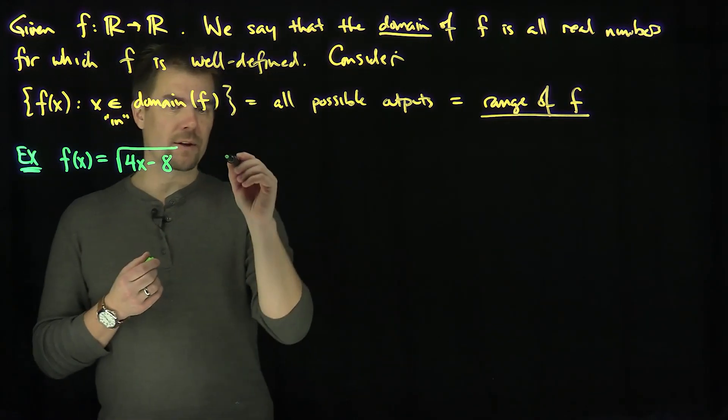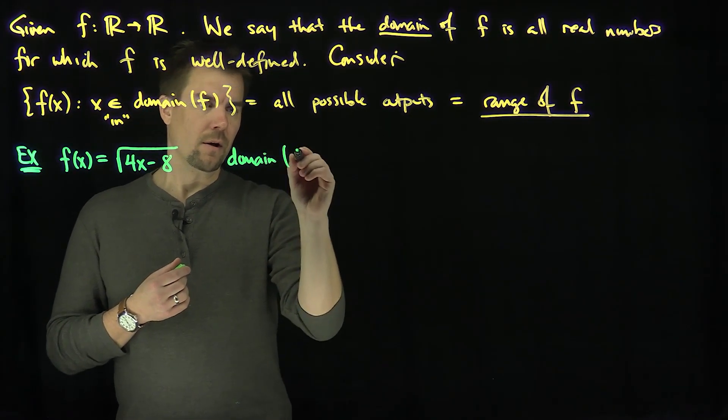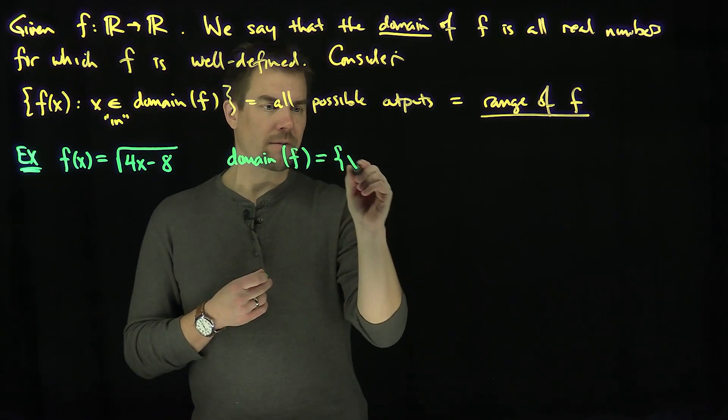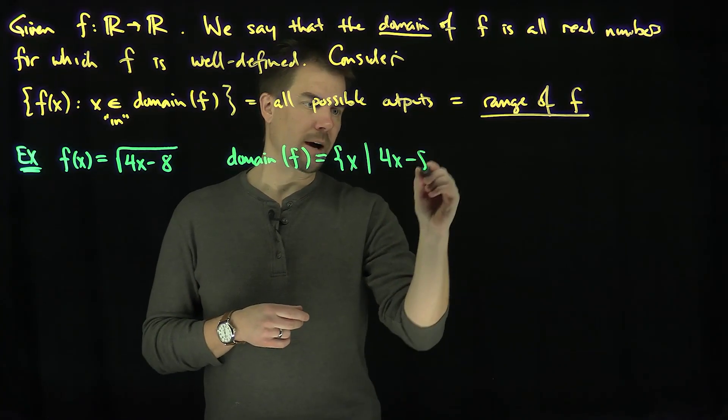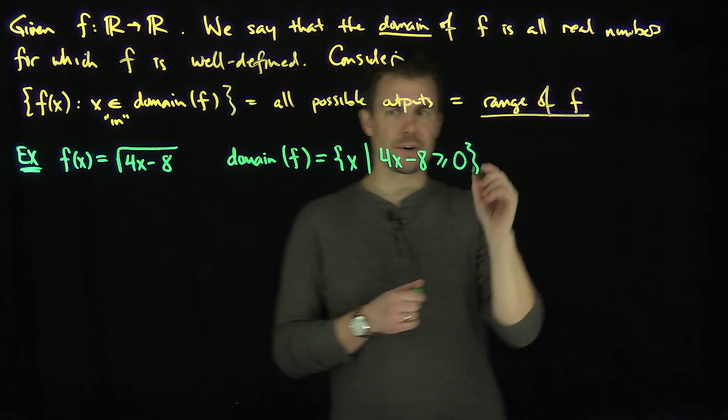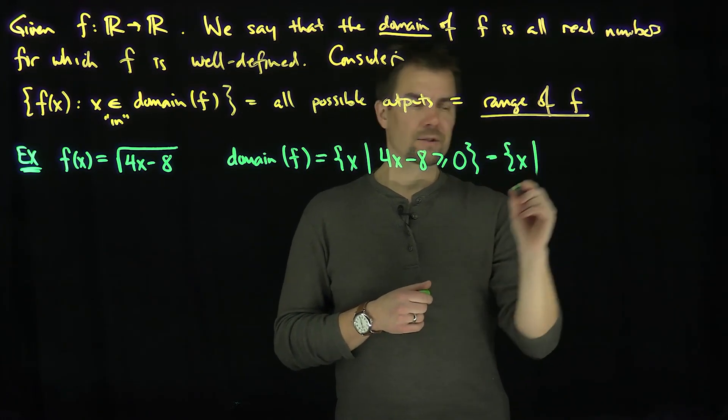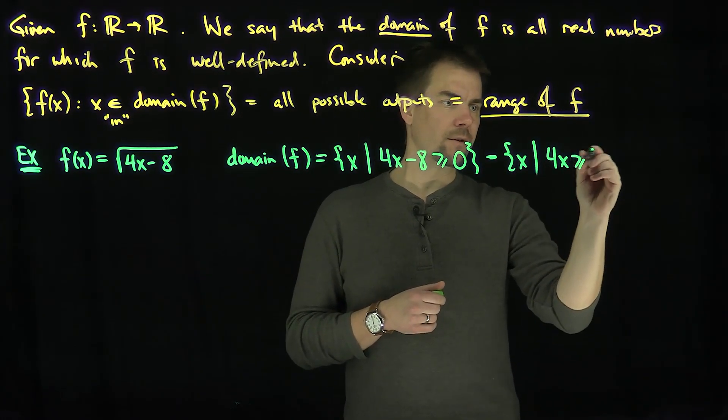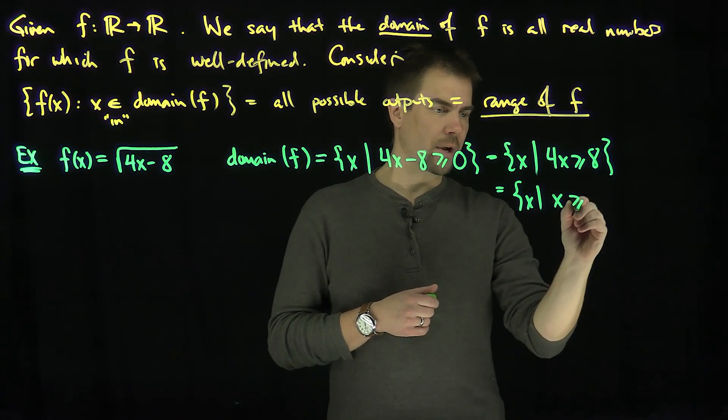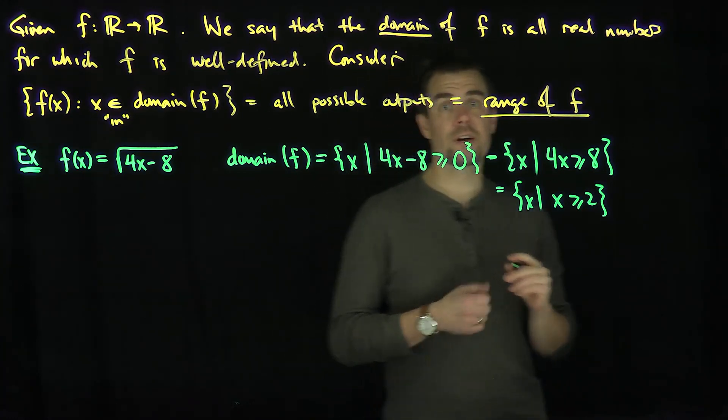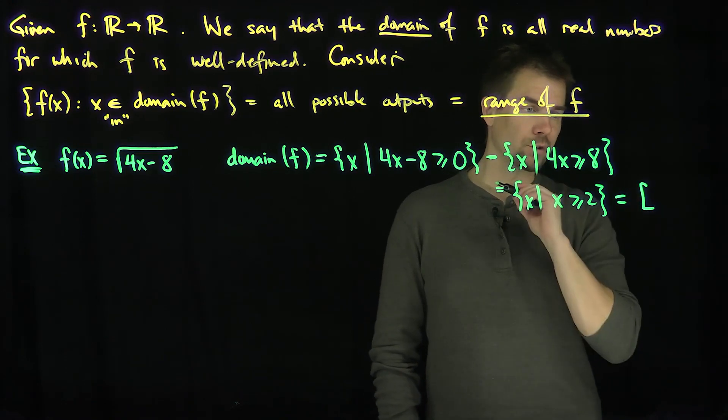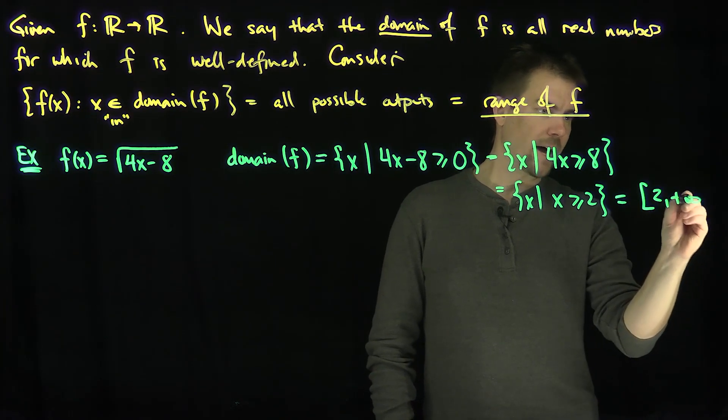So I need to find the domain of this function f. What do we need? It's all the possible values x such that 4x minus 8 is greater than or equal to 0. So if we solve this inequality, it's the set of x in R such that 4x is bigger than or equal to 8. And that's exactly the same as the set of x such that x is bigger than or equal to 2, which we can write in interval notation. All numbers that are bigger than or equal to 2 in interval notation is the interval 2 closed bracket up to positive infinity.